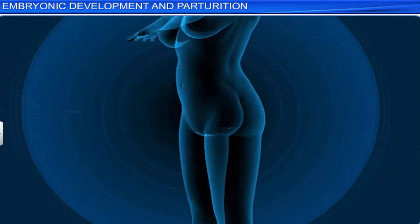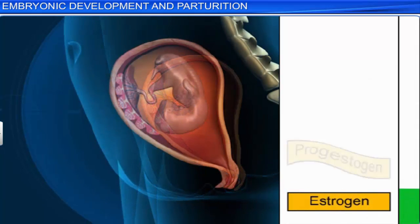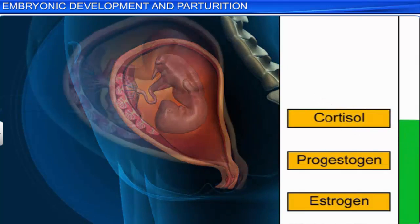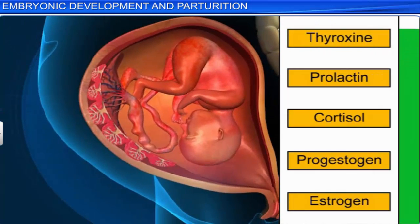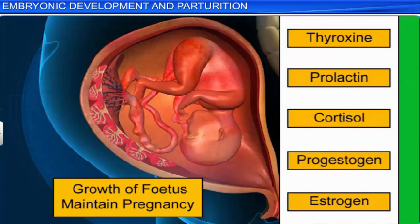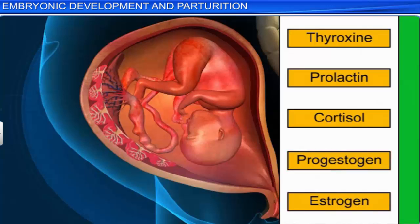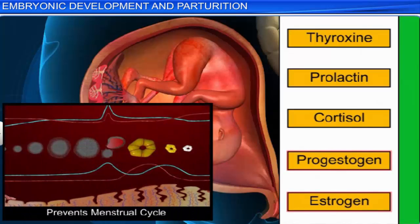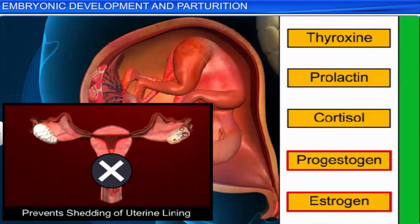Apart from the secretion of these hormones, the levels of other hormones such as estrogen, progestogen, cortisol, prolactin, and thyroxine also rise rapidly in a pregnant woman's body. These hormones support the growth of the fetus as well as maintain the pregnancy. Increased levels of progestogen and estrogen, for instance, put the menstrual cycle on hold and prevent the shedding of the uterine lining, which is embedded with the developing fetus.